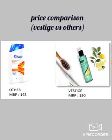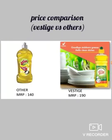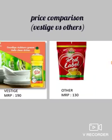Shampoo: 145 rupees, 190 rupees. Detergent powder: 56 rupees, 160 rupees. Dish wash: 140 rupees, 190 rupees.